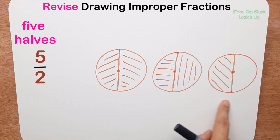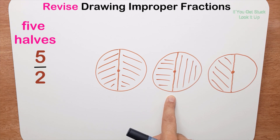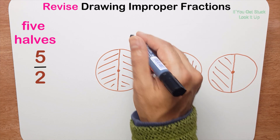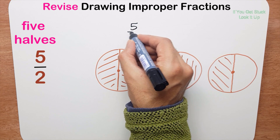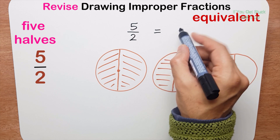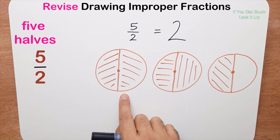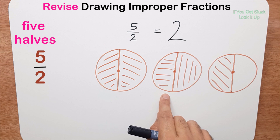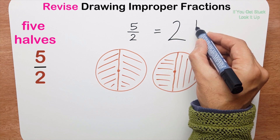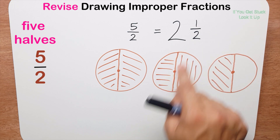Looking carefully, I've got one whole pizza, two whole pizzas, and half a pizza. So five halves is equal to two whole pizzas and one half — that is, two and a half pizzas.